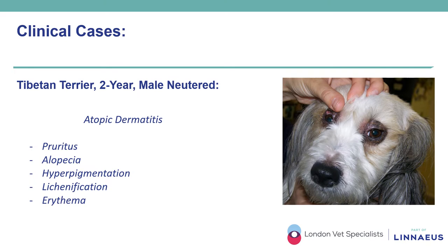A two-year-old male neutered Tibetan Terrier presented with pruritus and alopecia with hyperpigmentation, lichenification and erythema, affecting solely the periorbital skin. After ruling out ectoparasitic diseases and treating skin infections, the most common differential diagnoses were hypersensitivity skin conditions including atopic dermatitis, food or non-food-induced. After a dietary trial which unsuccessfully controlled the clinical signs, a clinical diagnosis of atopic dermatitis triggered by environmental allergens was made.